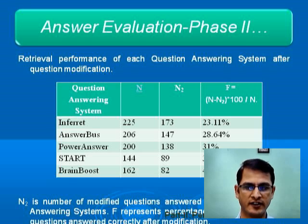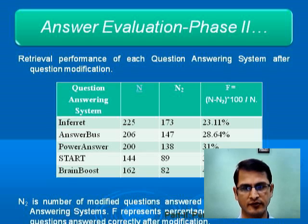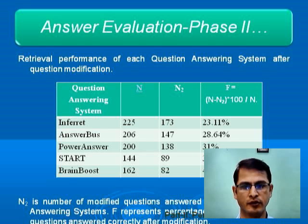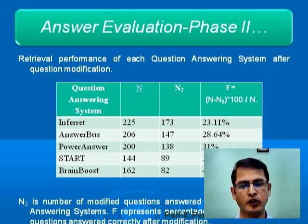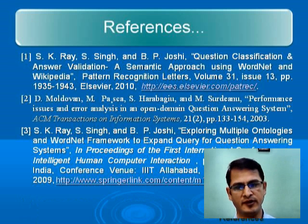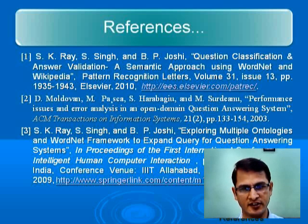Without any exceptions, all question answering systems gave correct answers for fewer questions after modification. Inferret now gave correct answers for only 173 questions instead of 225, a performance drop of 23.11%. In fact, all question answering systems saw their performance go down by almost 30%. This indicates there is a lot of scope for research in the field of question answering systems. I will present some methods in my next lecture. I am giving you some references where you can learn more about question answering systems and related research. Thank you.